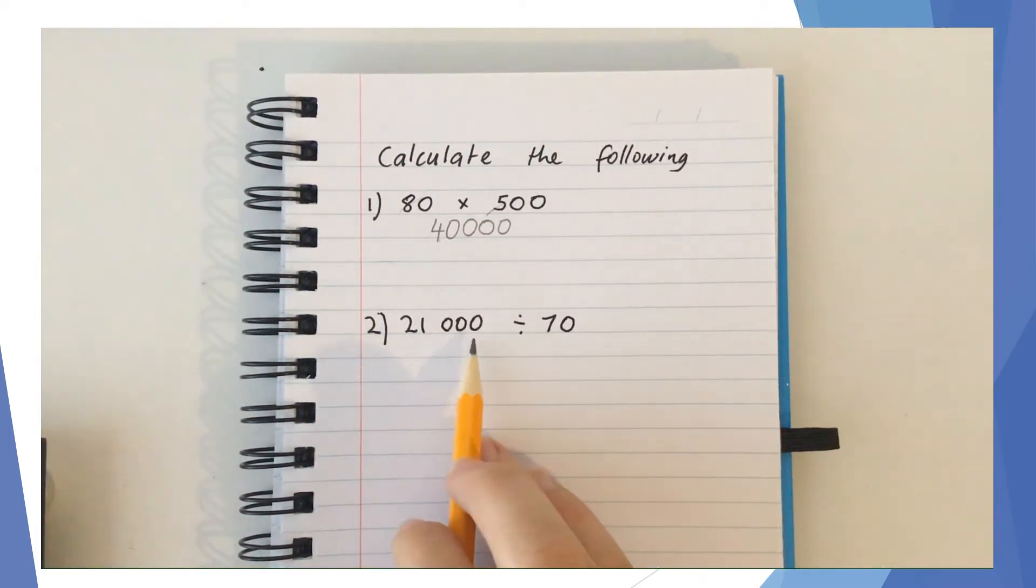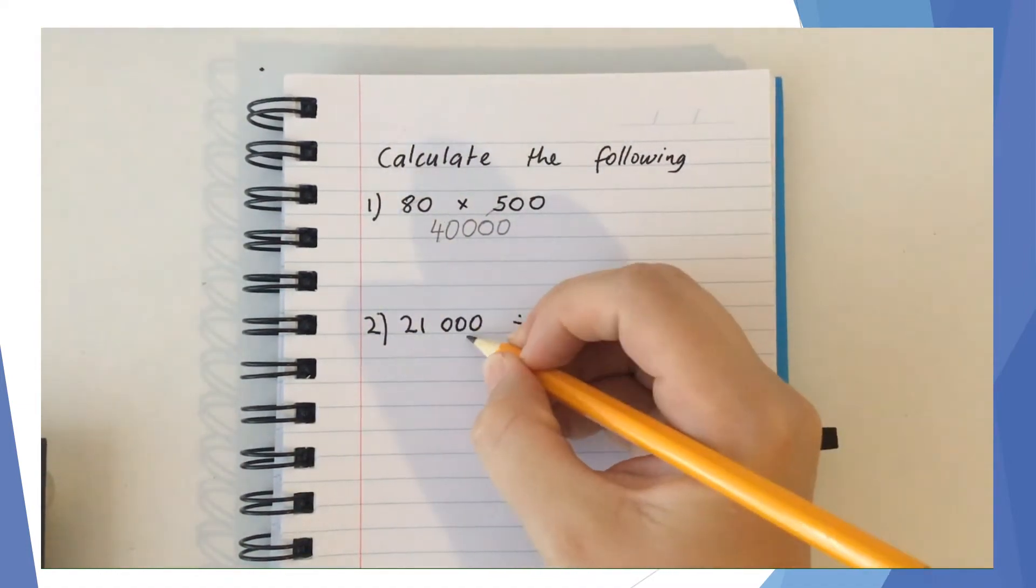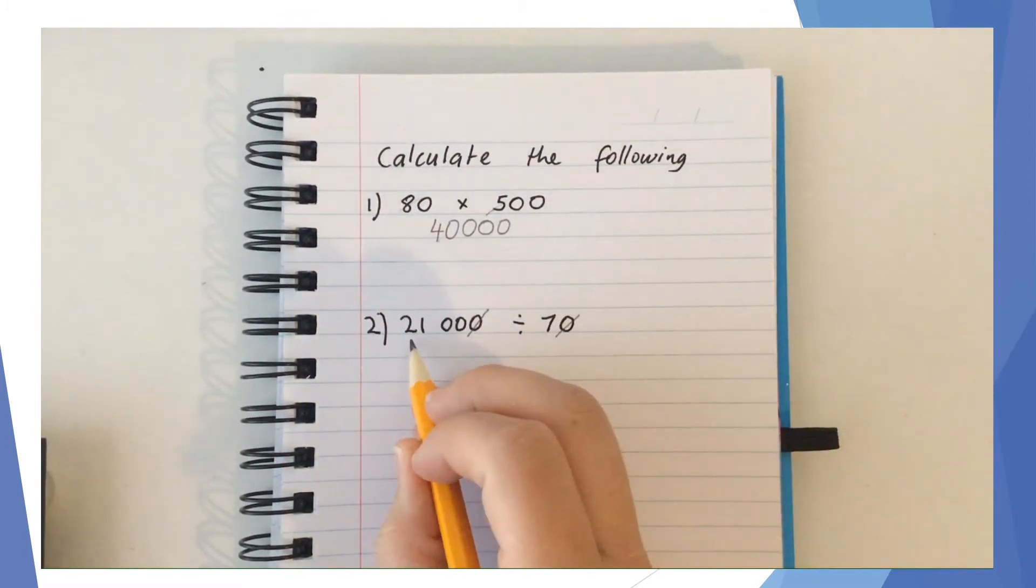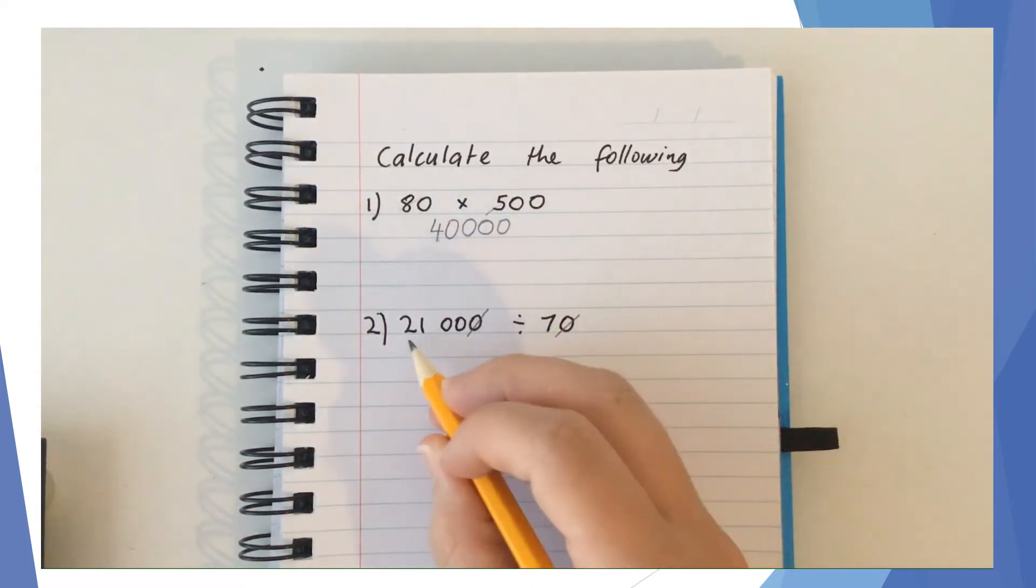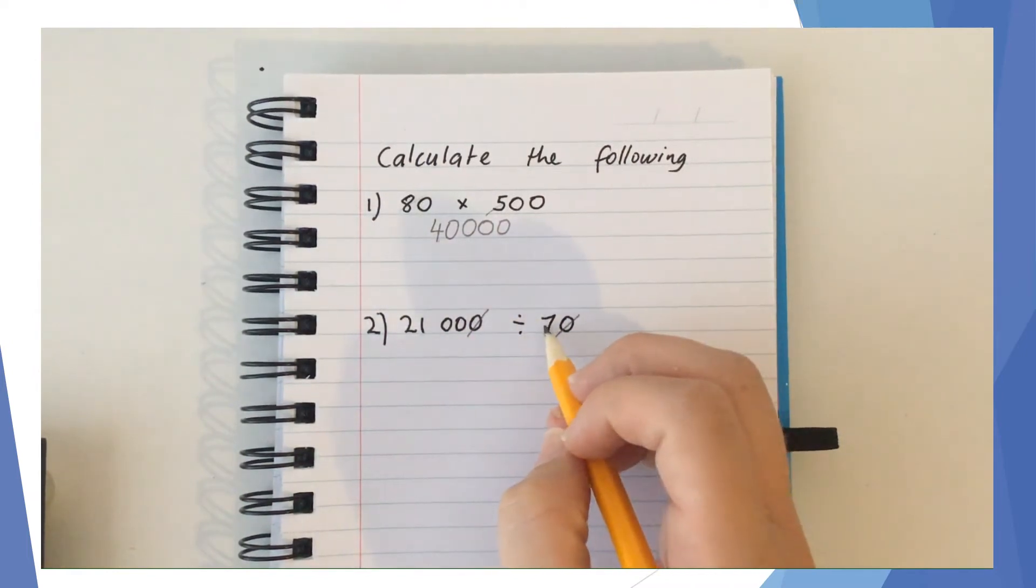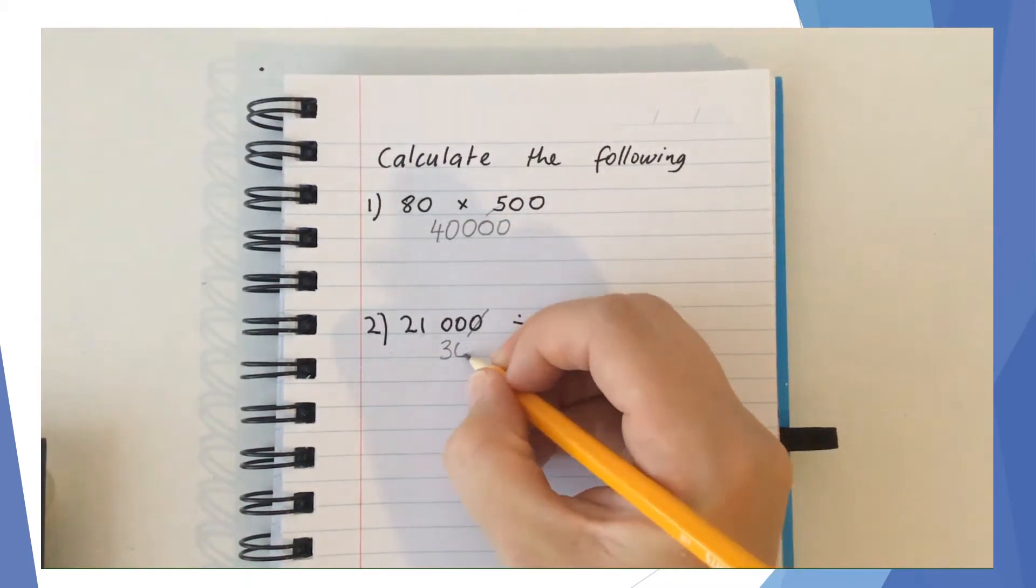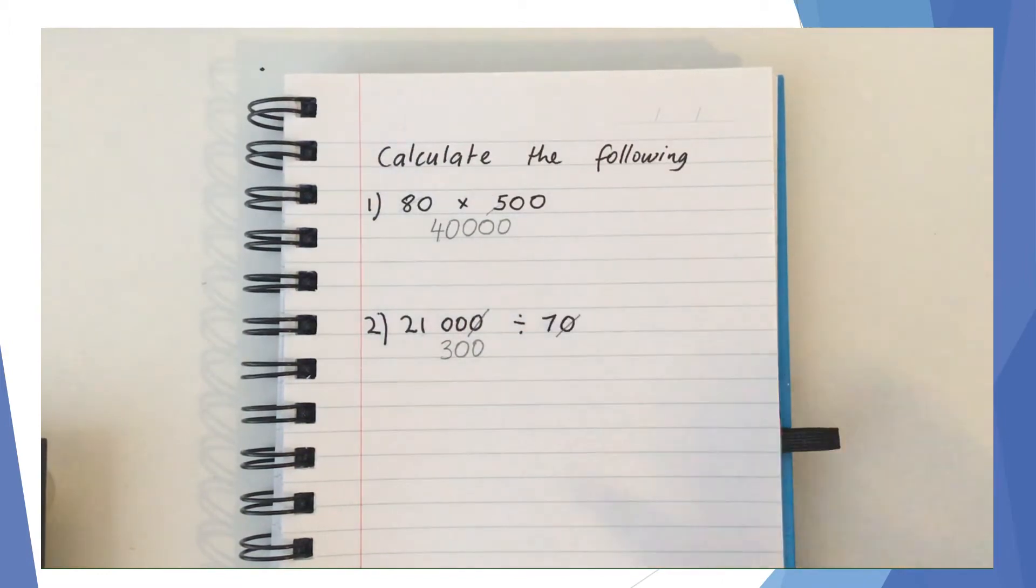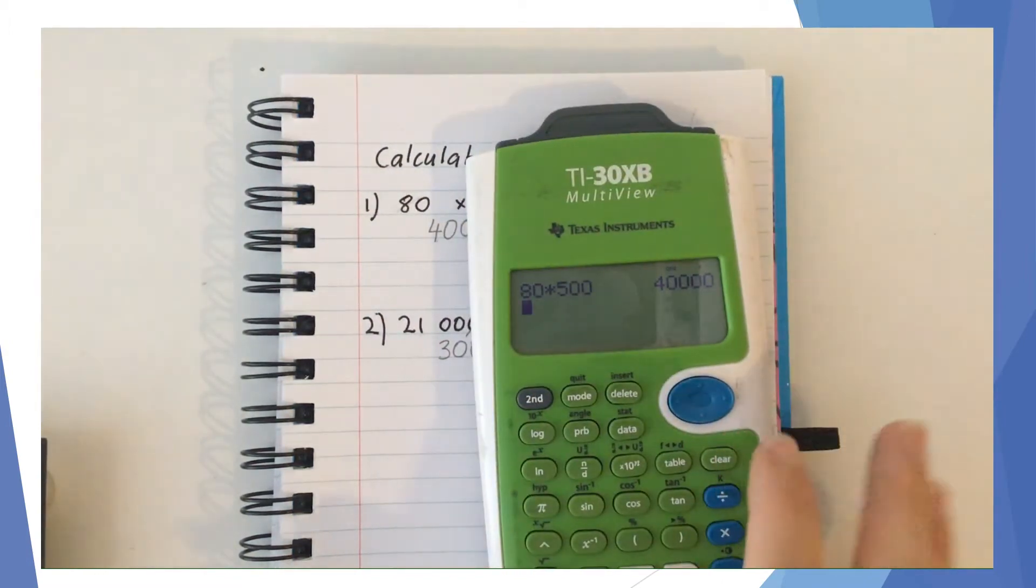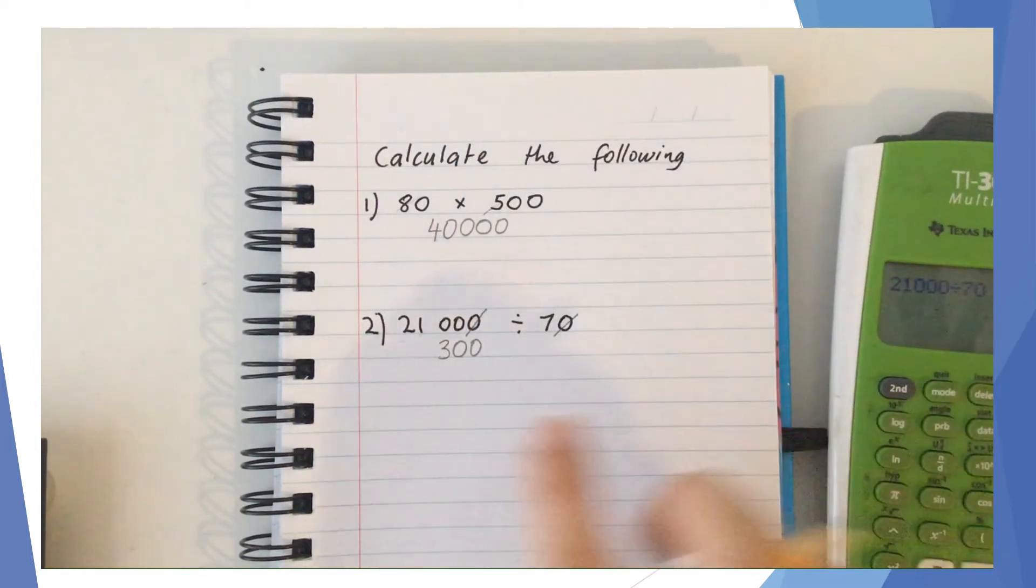In example 2, we're looking at 21,000 divided by 70. Because we're doing divide, I can take off one zero at the end of each, leaving 2,100 divided by 7. I'm going to do the front bit first and worry about the zeros later. 21 divided by 7 is 3, and I've got two zeros afterwards, so the answer is 300. When I check that on my calculator, 21,000 divided by 70 is 300, so our answer is correct.